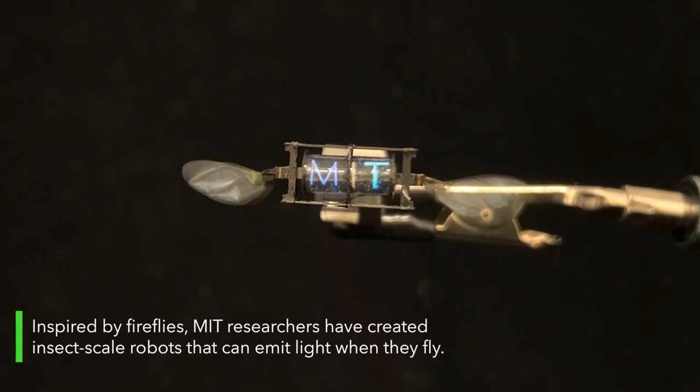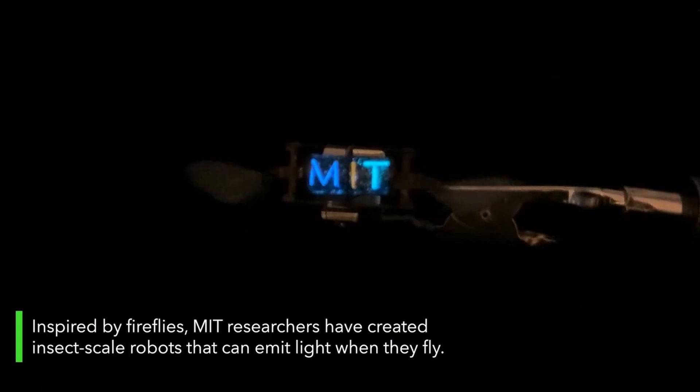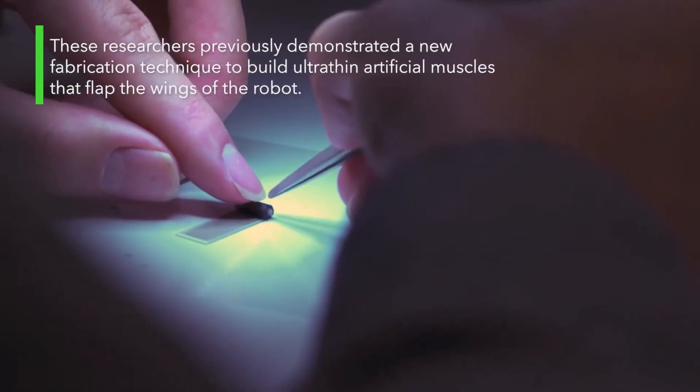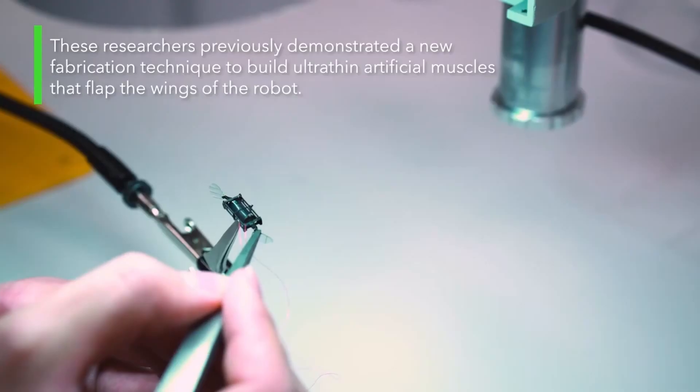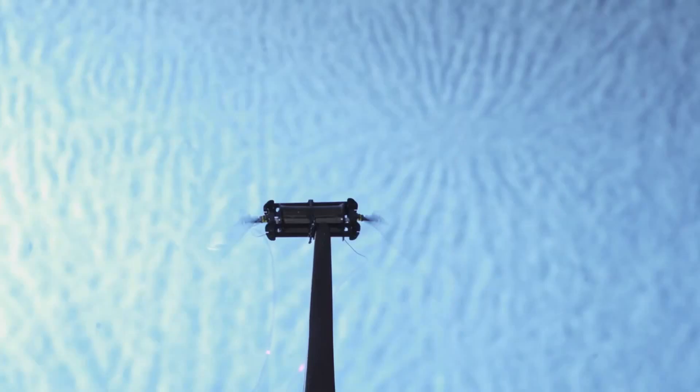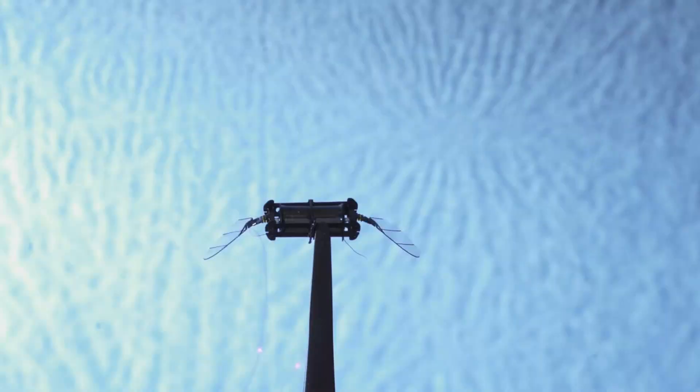Robotic lightning bugs take flight. Inspired by fireflies, researchers from MIT create insect-scale robots that can emit light when they fly, which enables motion tracking and communication between them. Taking a cue from nature, the researchers from MIT built electroluminescent soft artificial muscles for flying insect-scale robots. The tiny artificial muscles that control the robot's wings emit colored light during flight. This electroluminescence could enable the robots to communicate with each other.